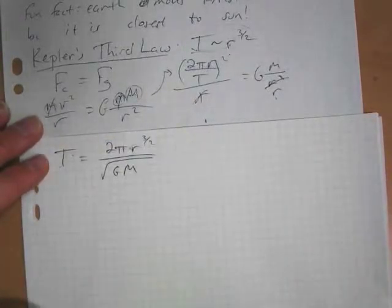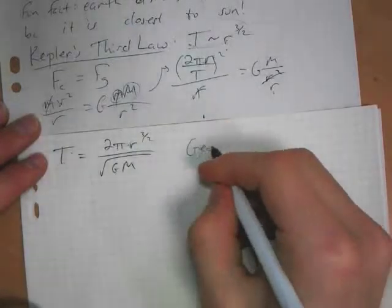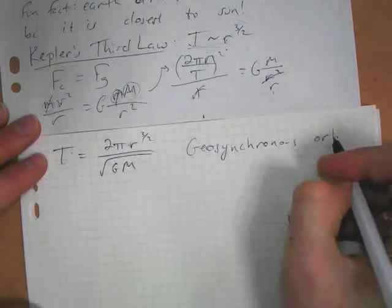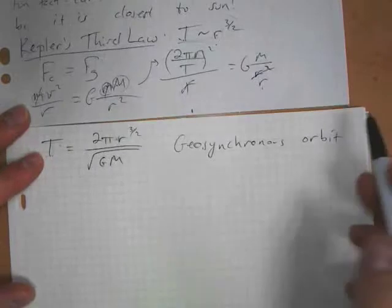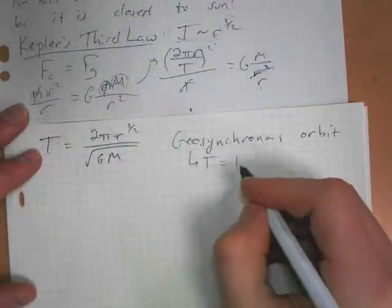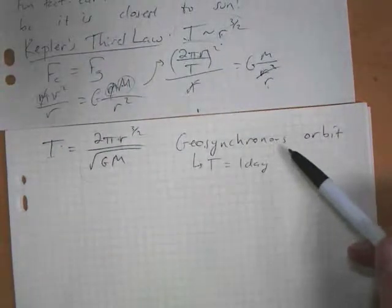by measuring distances and periods of their moons and things like that. And this also allows us to place satellites in what's called geosynchronous orbit. A geosynchronous orbit means the period is one day, or 24 hours.